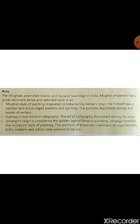Jahangir's reign is considered the golden age of Mughal painting. Jahangir fortified the miniature style of painting. Portraits of emperors, members of royal families, sufis, soldiers and artists were painted during his era. Jahangir greatly strengthened the style of painting, and paintings of emperors, royal family members, sufis, soldiers and artists were made.